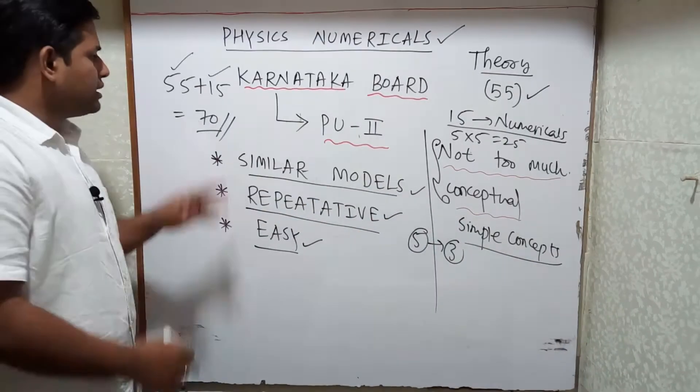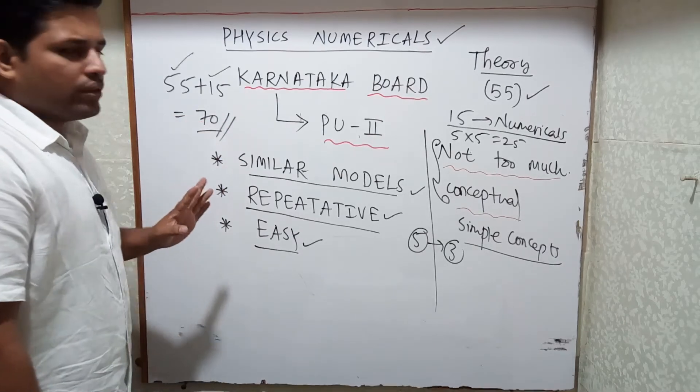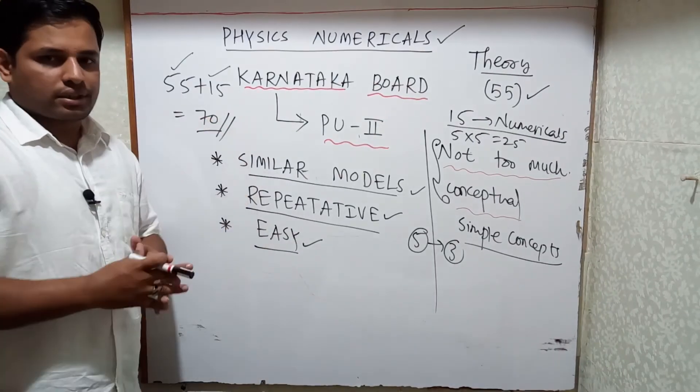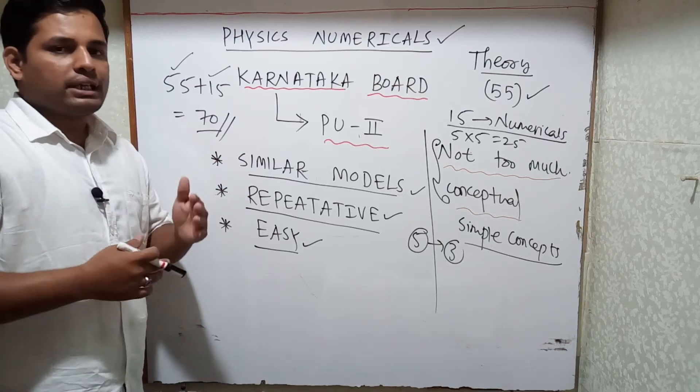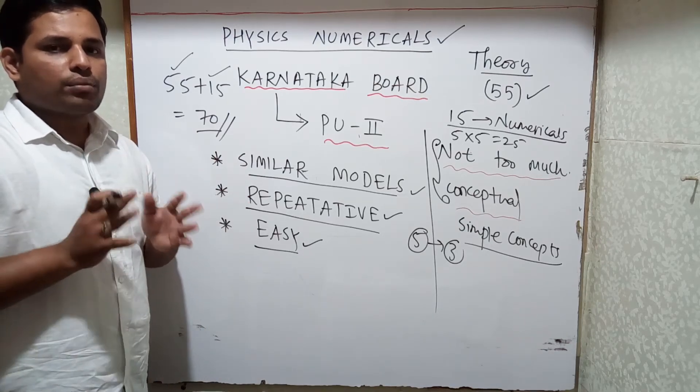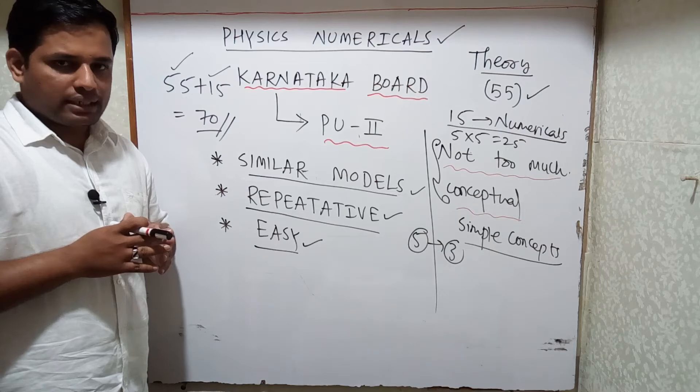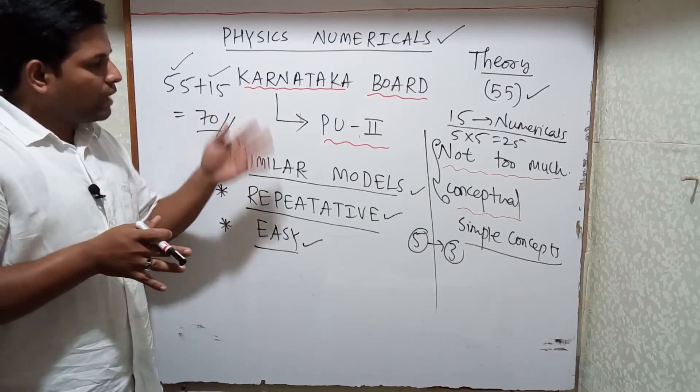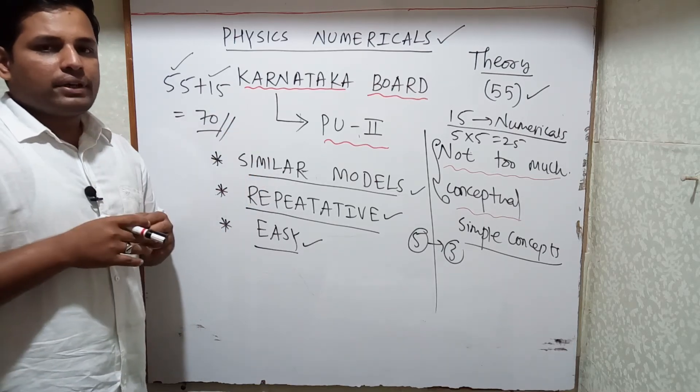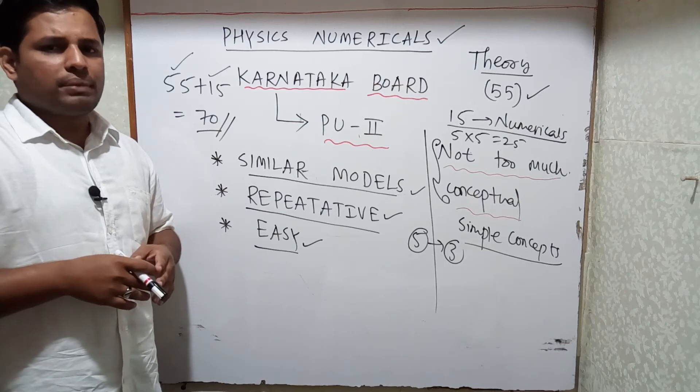Our target is 55 plus 15, 70. We'll make sure that you will score this. Keep following and visit the playlist. Whatever Karnataka Board numericals for PU-II, I have made the playlist. Visit that so you will have complete idea. In each video we'll discuss one or two problems.